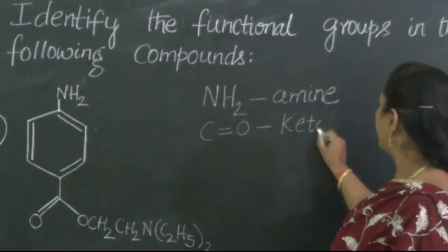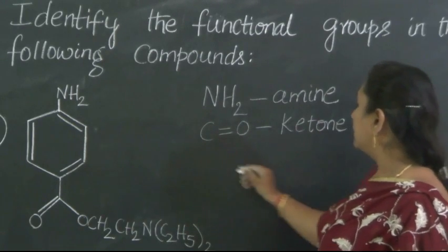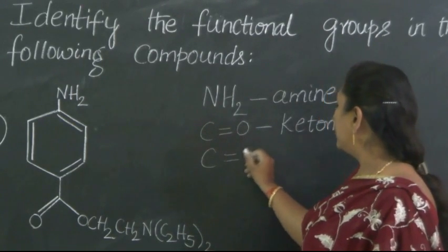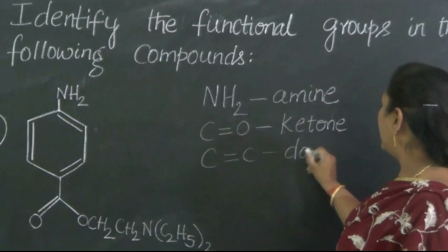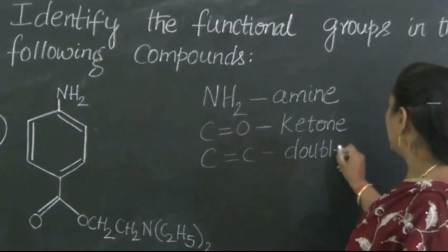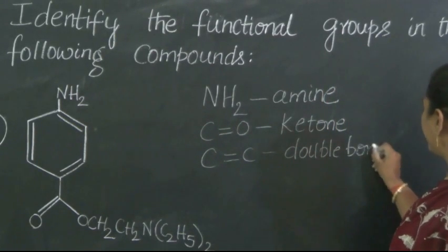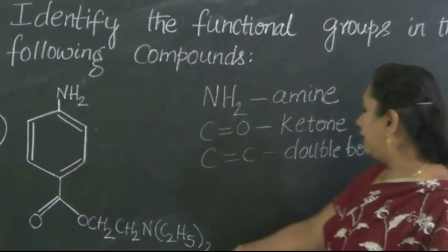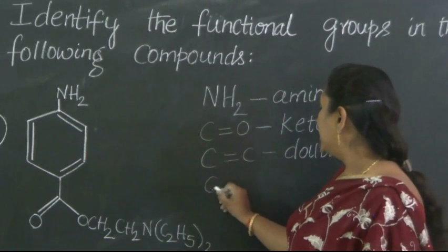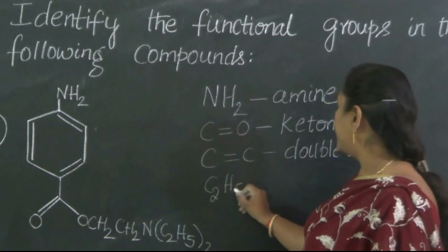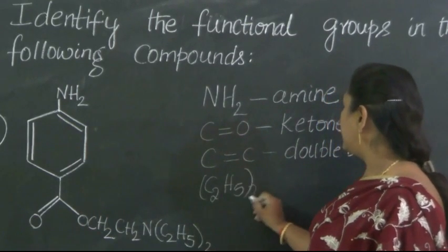CO is ketone and then carbon carbon is linked by double bond which also has to be written, and then here there is C2H5 twice.